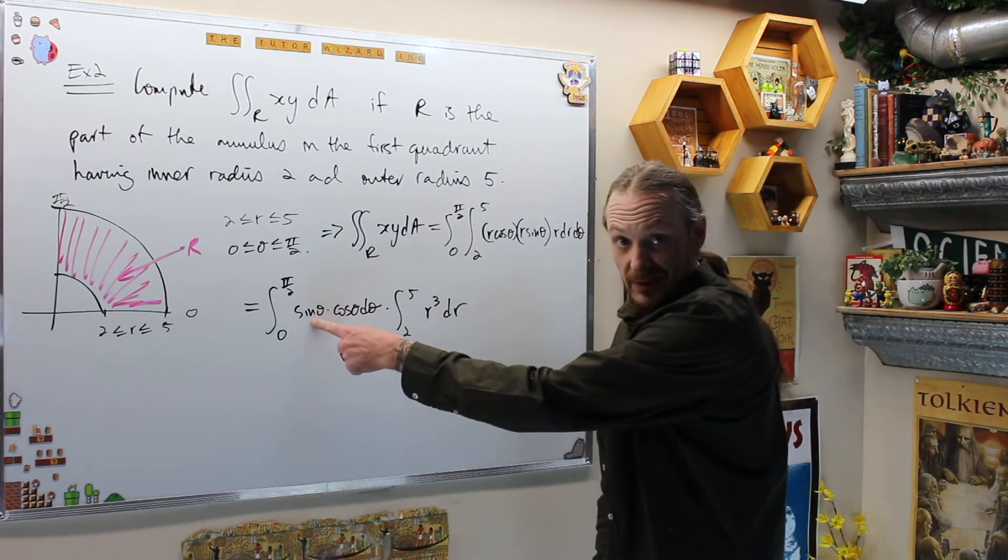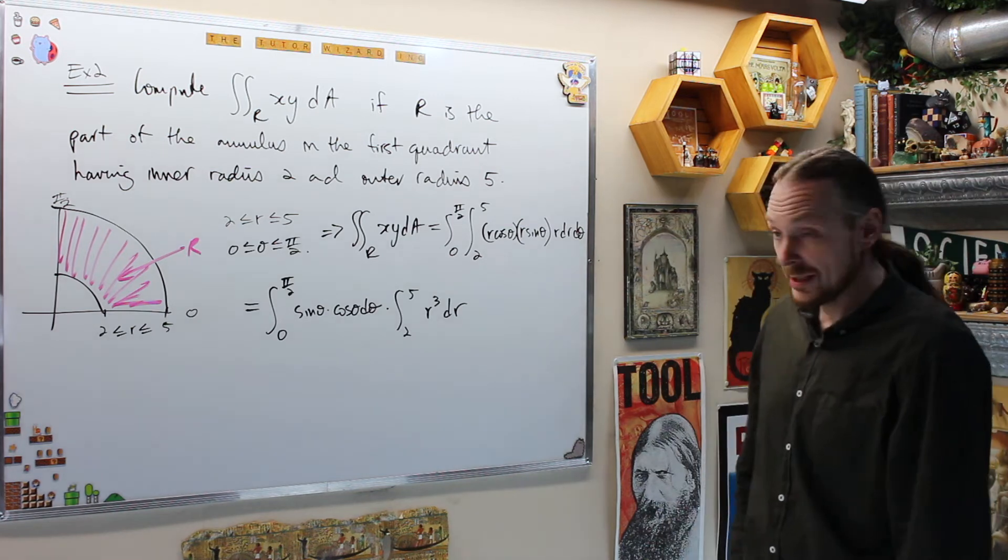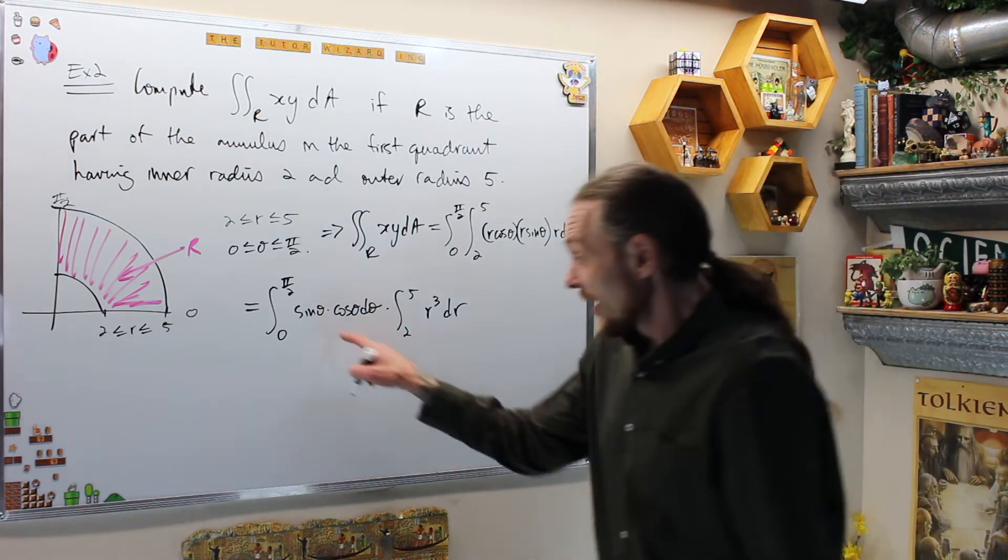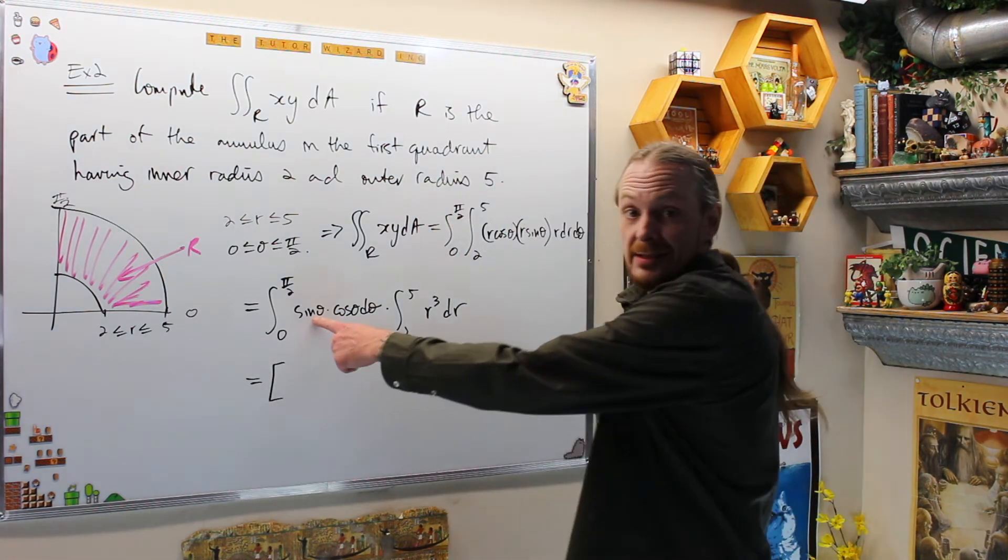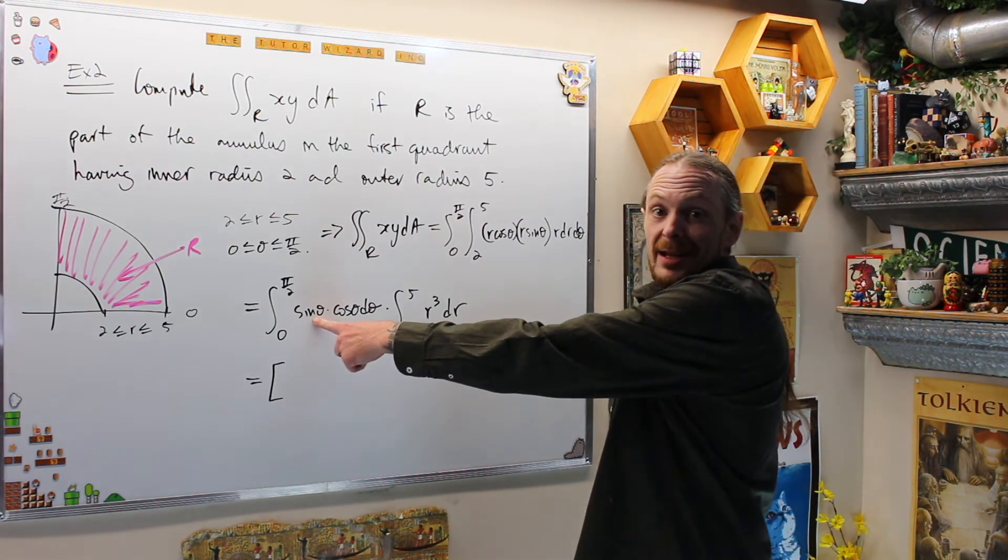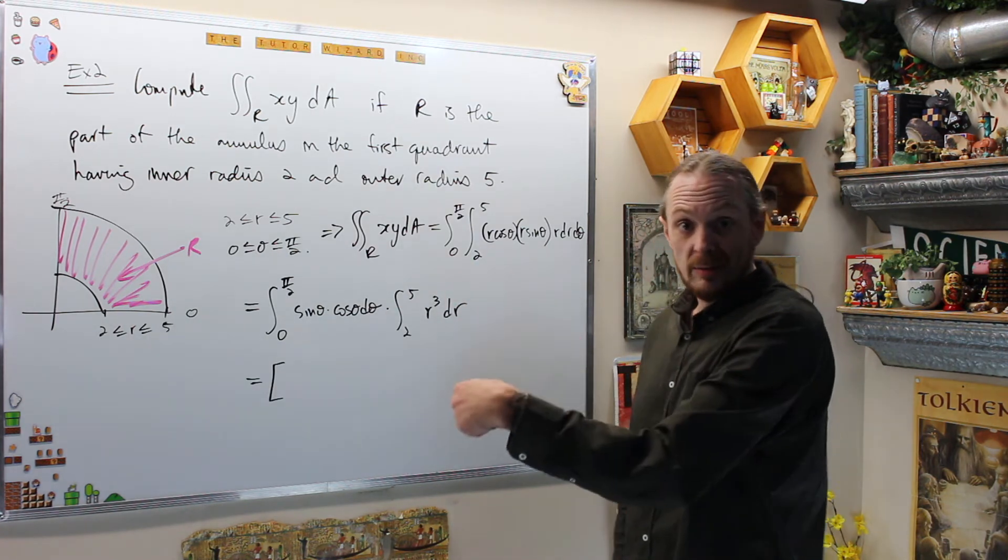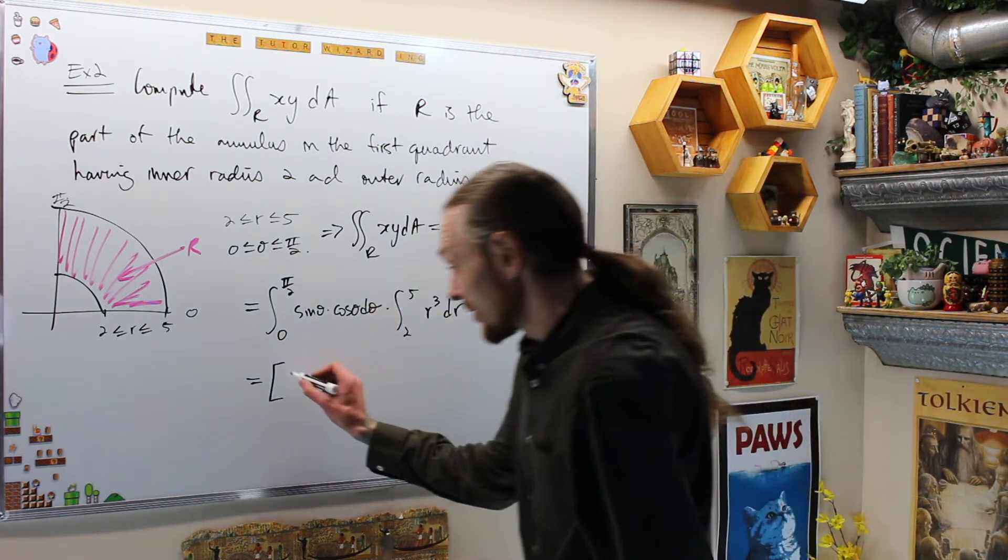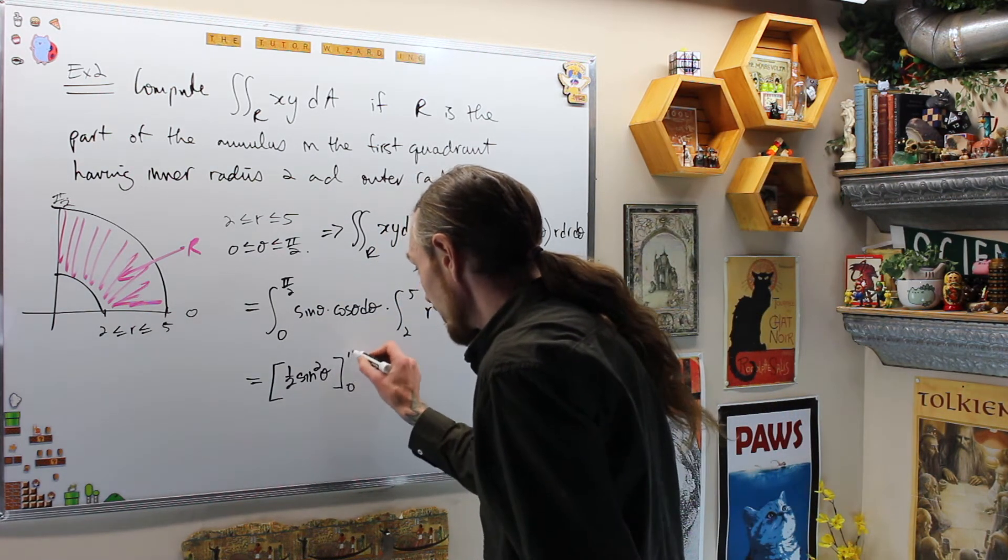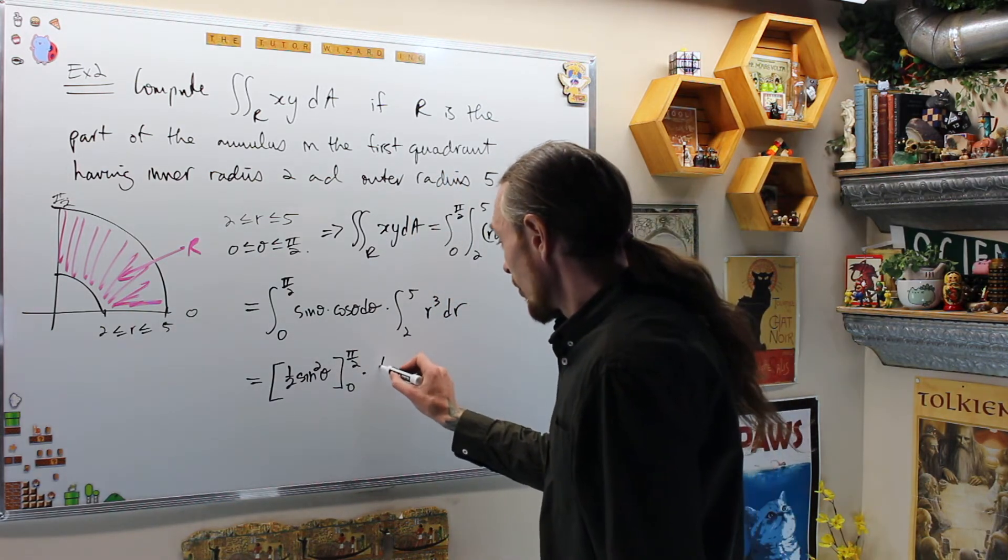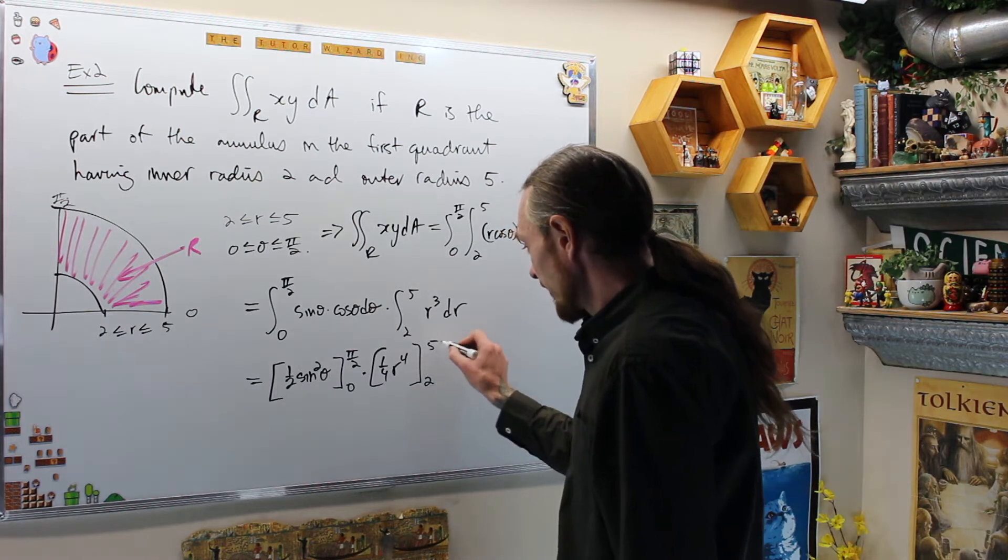And then I've already said what the derivative of sine cos theta, d theta, that's correct. So we have a substitution rule in here. Either way, what is this going to give us using that substitution in my head? We're going to write this as this is w, w is sine, then dw is cos theta, d theta. Then I have the integral of w, which is 1 half w squared, w is sine. So this is 1 half sine squared theta from 0 to pi over 2 times 1 over 4 r to the 4 from 2 to 5.